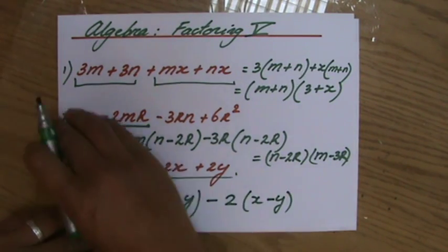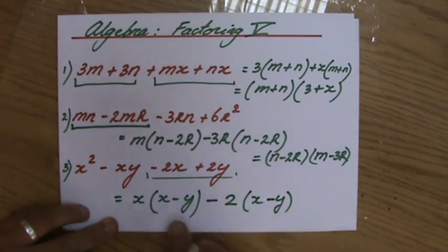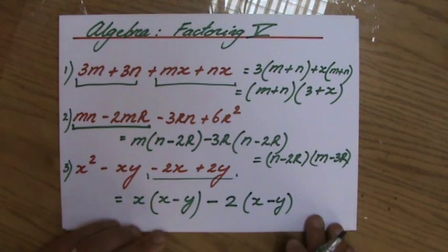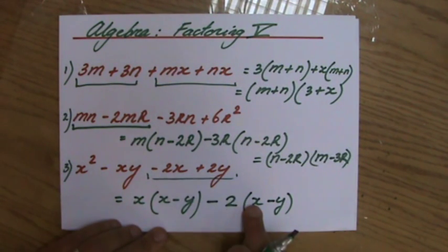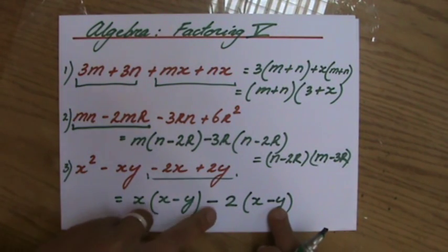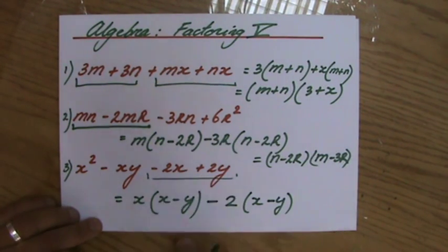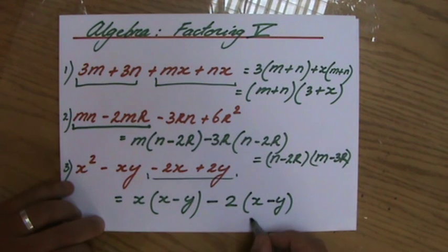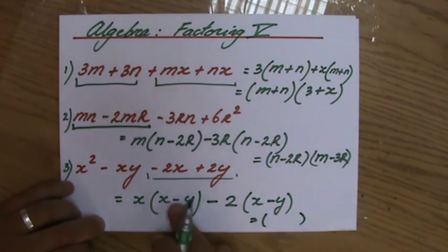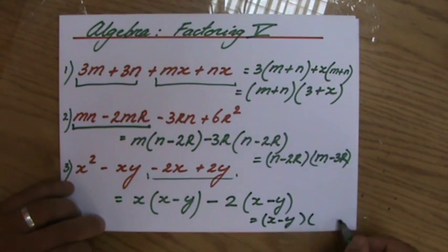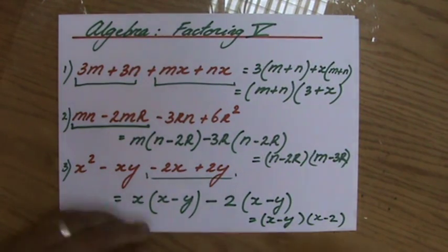Because inside my brackets, same as that previous question, needs to be the same as inside my brackets there from my first group. Let me just check that. Minus 2 times x is minus 2x. Minus 2 times minus y is a positive 2y. Yeah, that is correct. Okay, final step then. So those brackets are the same. x minus y. And my second set of brackets, x minus 2. Okay, I will expand this one for you just to show you that it's correct.